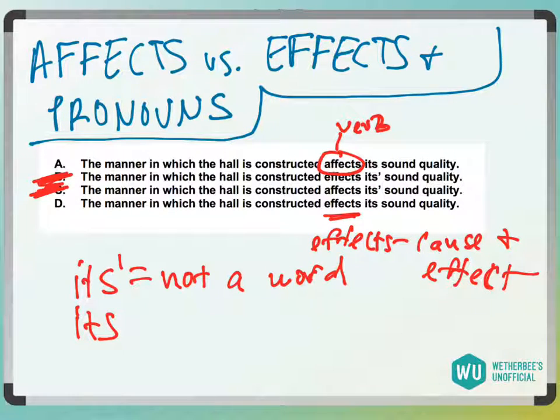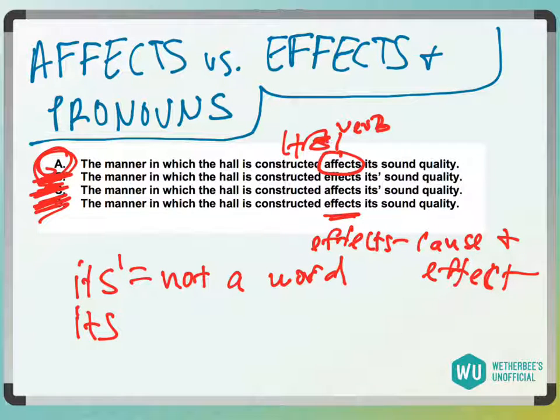So if it's being used as a verb, something affects something else, you use affects. That would make answer choice D wrong. It would be answer choice A, because the manner in which the hall is constructed affects its sound quality. So answer choice A.